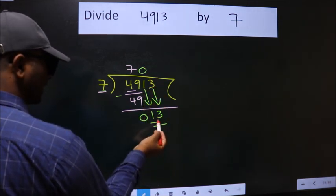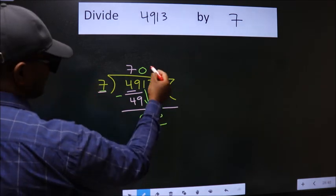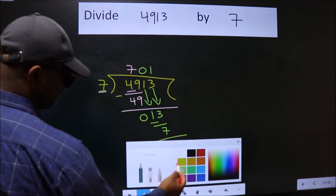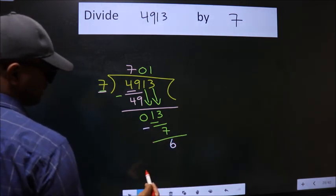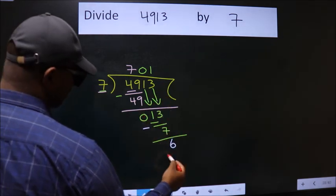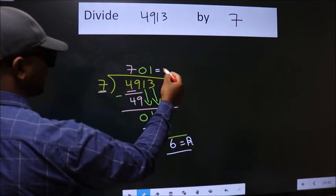So 13. A number close to 13 in 7 table is 7 times 1 is 7. Now we subtract. We get 6. No more numbers to bring it down, so we stop here. This is our remainder. This is our quotient.